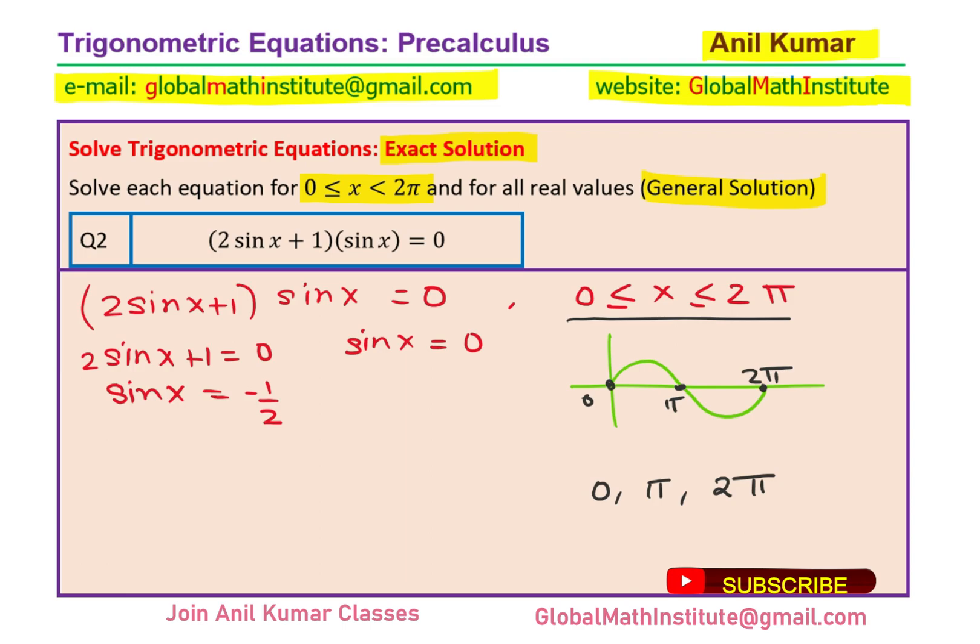Now let us look into the first factor, sin x = -1/2. For that, let me make a special triangle. So 1, 2, √3. -1/2 means you will be in quadrant 3 and 4, and the angle will be π/6. So -1/2 means you are looking for these solutions. The angle is π/6, the related acute angle. So we get 7π/6 and 11π/6. So we have two more solutions: 7π/6 and 11π/6.